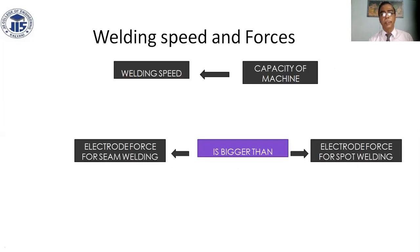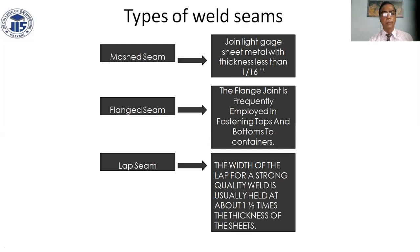Welding speed and electrode force for seam welding are greater than for spot welding. Types of weld seam: mash seam joint for light gauge sheet metals with thickness less than 1/16 inch (3 mm); flange seam, frequently used in fastening tops and bottoms to containers; lap seam, where the width of the lap for a strong quality weld is usually held at about half times the thickness of the seam.